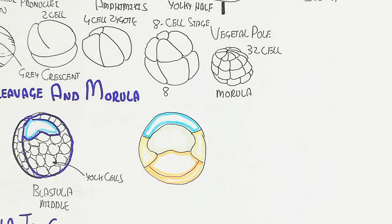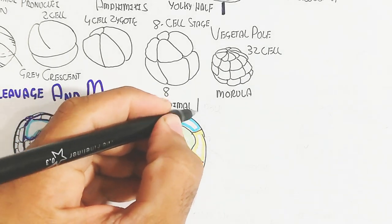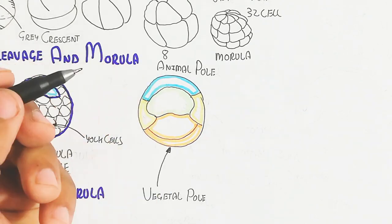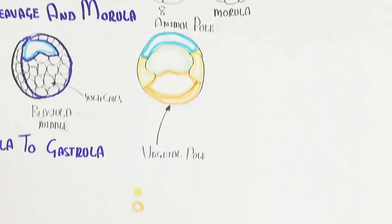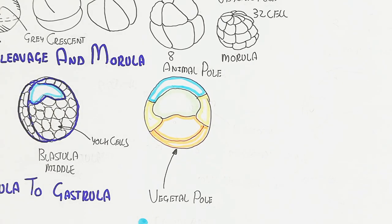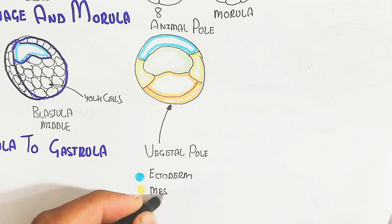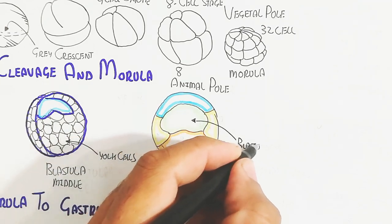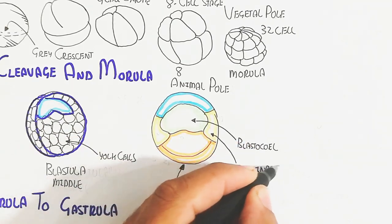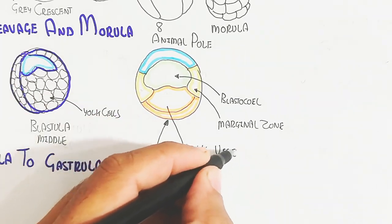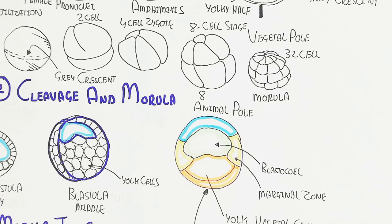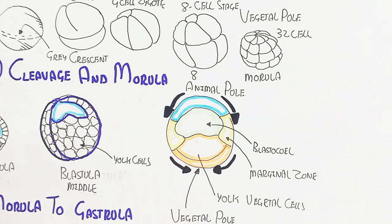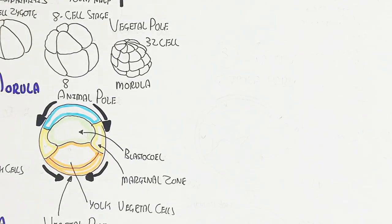From morula to gastrulation — the animal pole and vegetal pole are shown. The orange color is the endoderm, the blue color is the ectoderm, and the yellow color is the mesoderm. The blastocoel is denoted with light green color, this is the marginal zone of the mesoderm, and this is the yolk vegetal cell. Remember this is the movement of the ectoderm around the embryo.